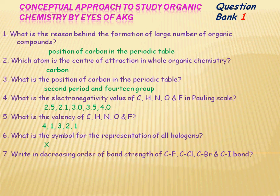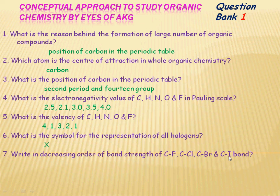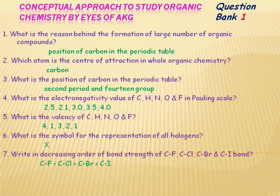Write the decreasing order of bond strength of carbon-fluorine, carbon-chlorine, carbon-bromine, and carbon-iodine bonds. When you analyze the bond strength of carbon-halogen bonds, the overlapping in carbon-fluorine is 2p-2p orbital; in carbon-chlorine it is 2p-3p; in carbon-bromine it is 2p-4p; and in carbon-iodine it is 2p-5p orbital. Since atomic sizes that are nearly the same have better overlapping, carbon-fluorine bond has the highest strength, followed by carbon-chlorine, carbon-bromine, and carbon-iodine.